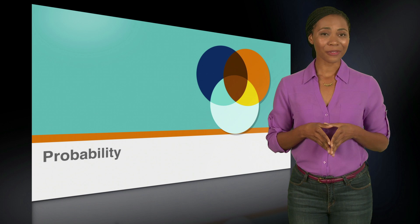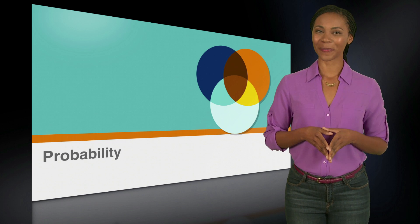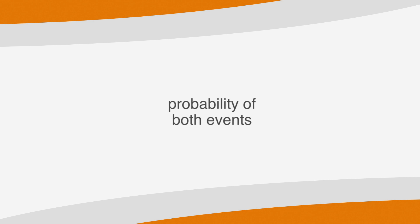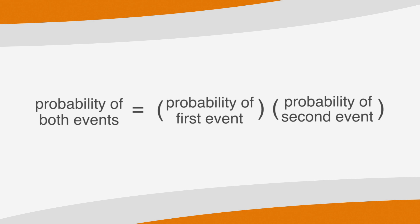This is a helpful skill for other types of problems, too. If the question asks for the probability of two events occurring together, you'll want to plug the values into a new equation. The probability of both events occurring is equal to the probability of the first event times the probability of the second event.